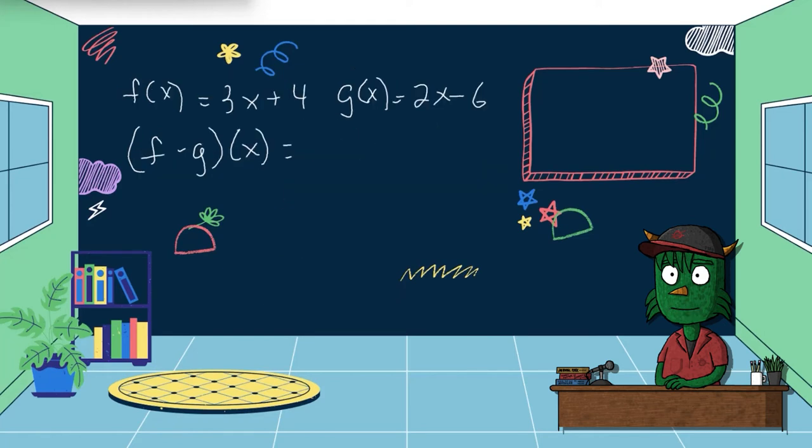Just like the addition one, I have a subtraction one. I have the same functions and I have f minus g of x. Subtraction adds one little wrinkle to it, however. So I have f(x) minus g(x). So same thing. 3x plus 4 minus 2x minus 6.